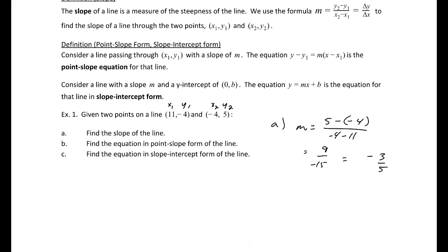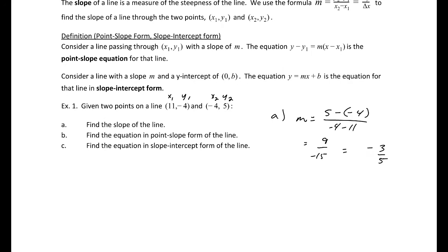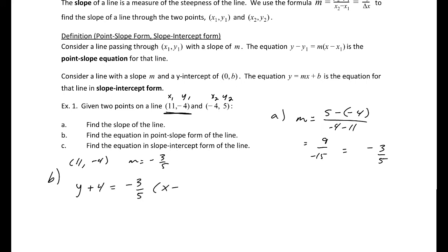Find the slope — that's part 1. For the point-slope form, I'm going to use the first point (11, -4) with a slope of negative 3/5. So y minus y1 gives us y plus 4, equals negative 3/5 times (x minus x1), which happens to be 11.